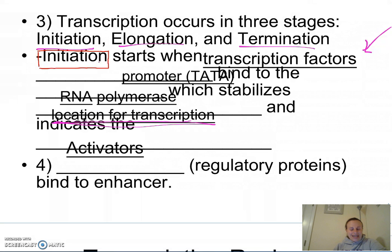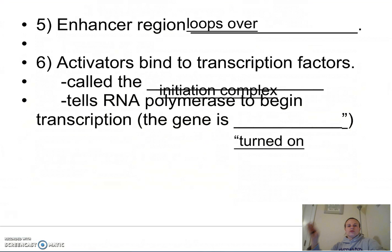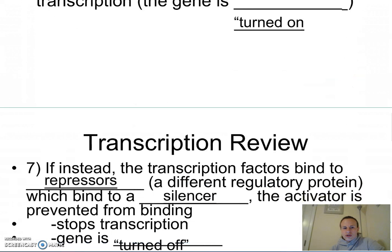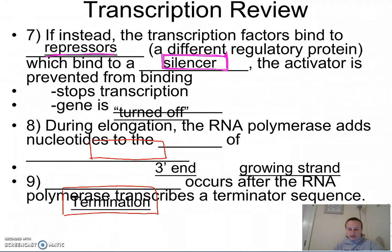Activators are regulatory proteins that bind to the enhancer, which is a different region on our strand of DNA. The enhancer region loops over so that those activators bind to the transcription factors, forming the initiation complex, which tells RNA polymerase to begin — meaning the gene is turned on. To turn the gene off, repressors bind to the silencer region. When that DNA loops over, repressors bind to the transcription factors and stop transcription, turning the gene off.